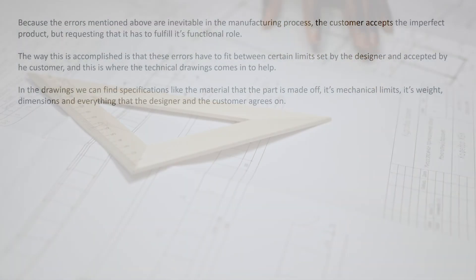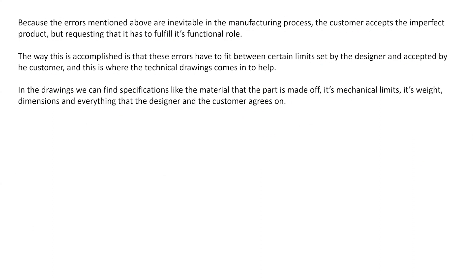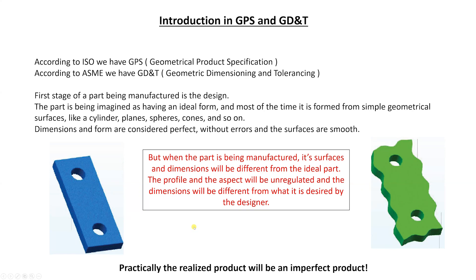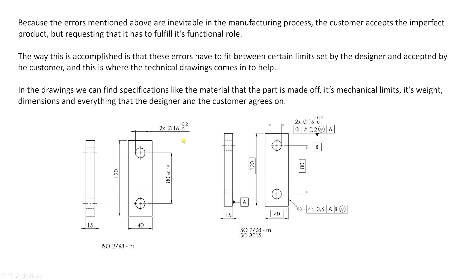And this is where the technical drawings come into help. In the drawings we can find specifications like the material that the part is made of, the mechanical limits, its weight, dimensions, and everything that the designer and the customer agrees on. So according to this drawing, if the part shown above respects the specifications and is according to the limits from the drawing, then it should be okay and the part should be accepted by the customer.